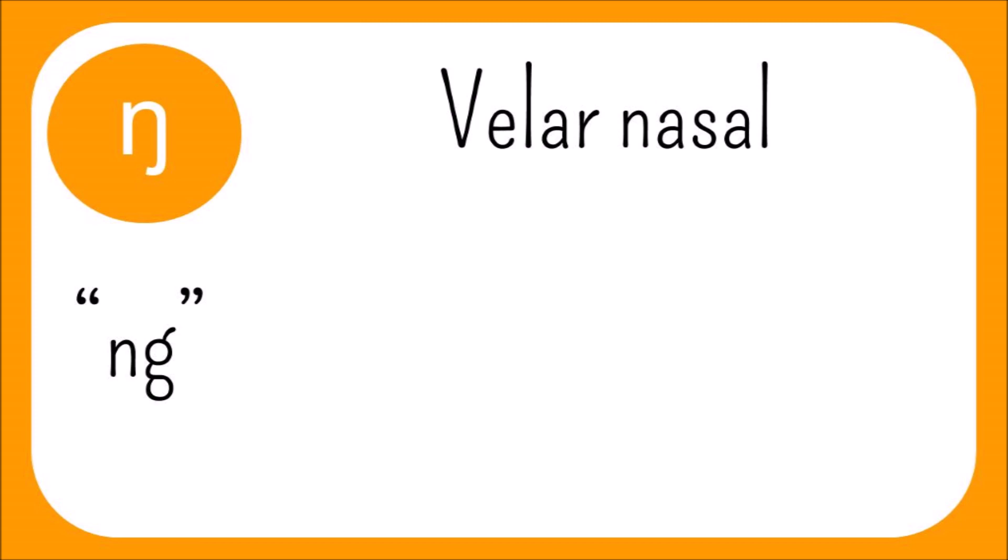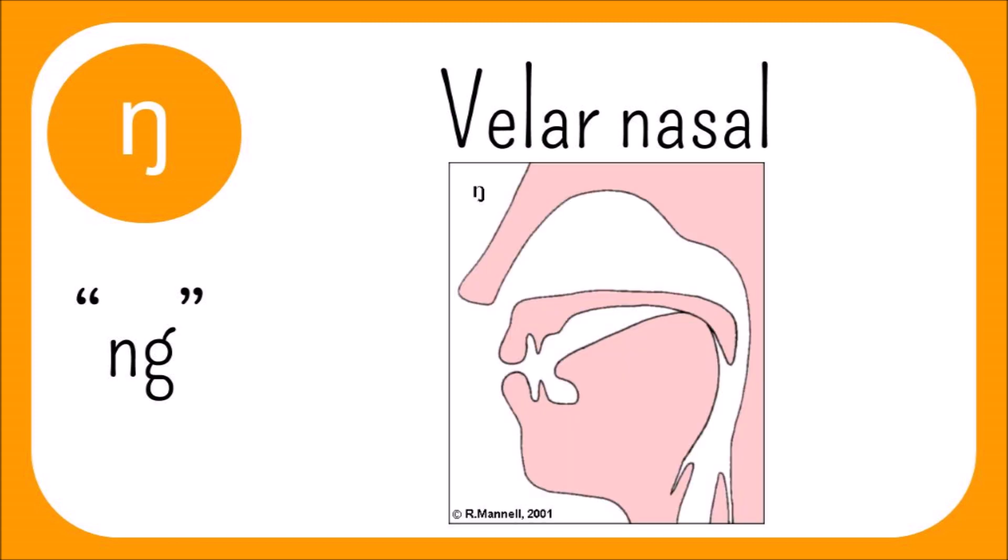NG is a sound which is found in words like long and song, and is usually written in English as ng. However, we also see it in words like ink and pink. It is a velar nasal, meaning that the back of the tongue rests against the velum at the soft palate. Like all English nasals, it too is voiced.